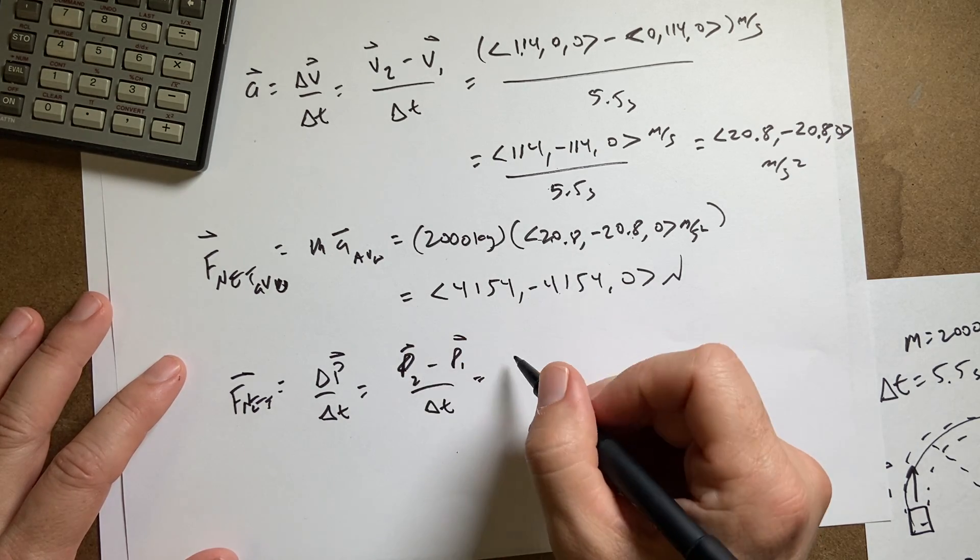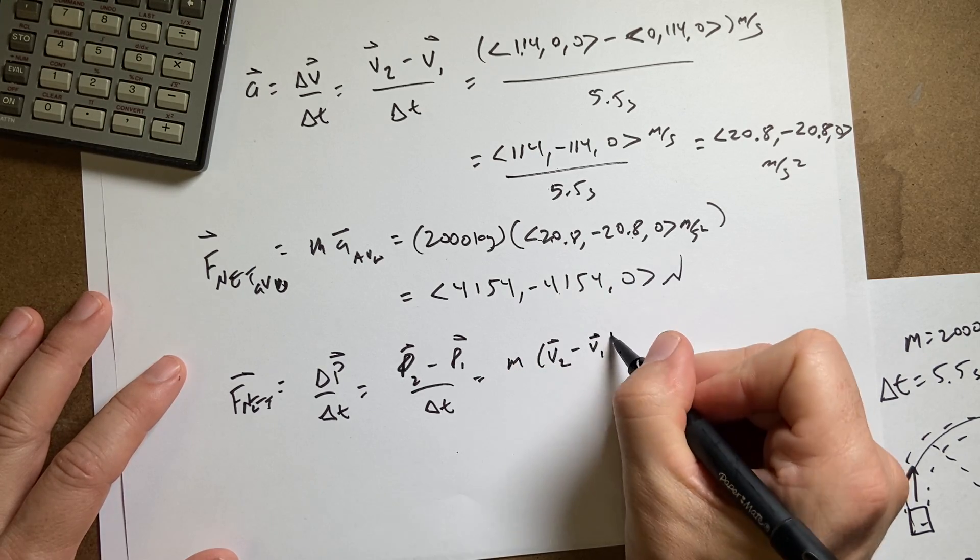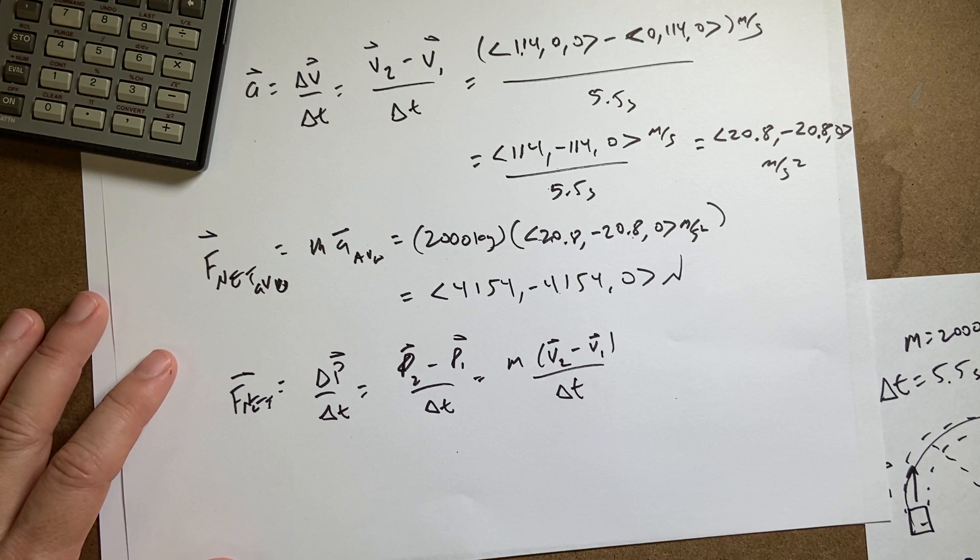But that is equal to M times V2 minus V1 over delta T. And that's the acceleration. So I'm going to get the exact same vector. Okay? And it didn't matter that it was a circle.